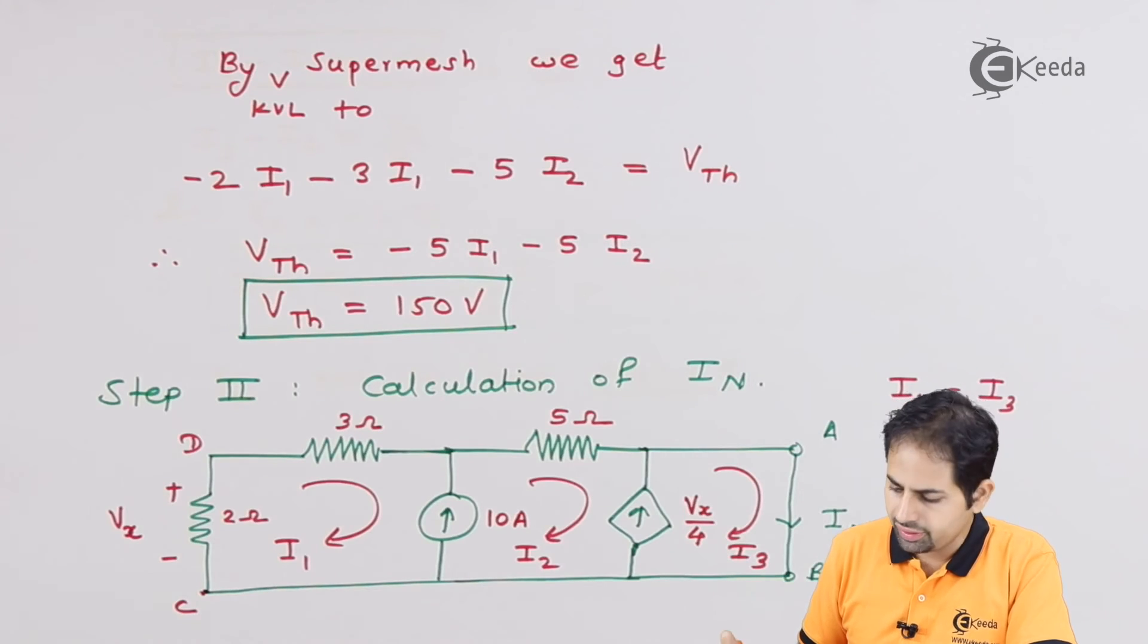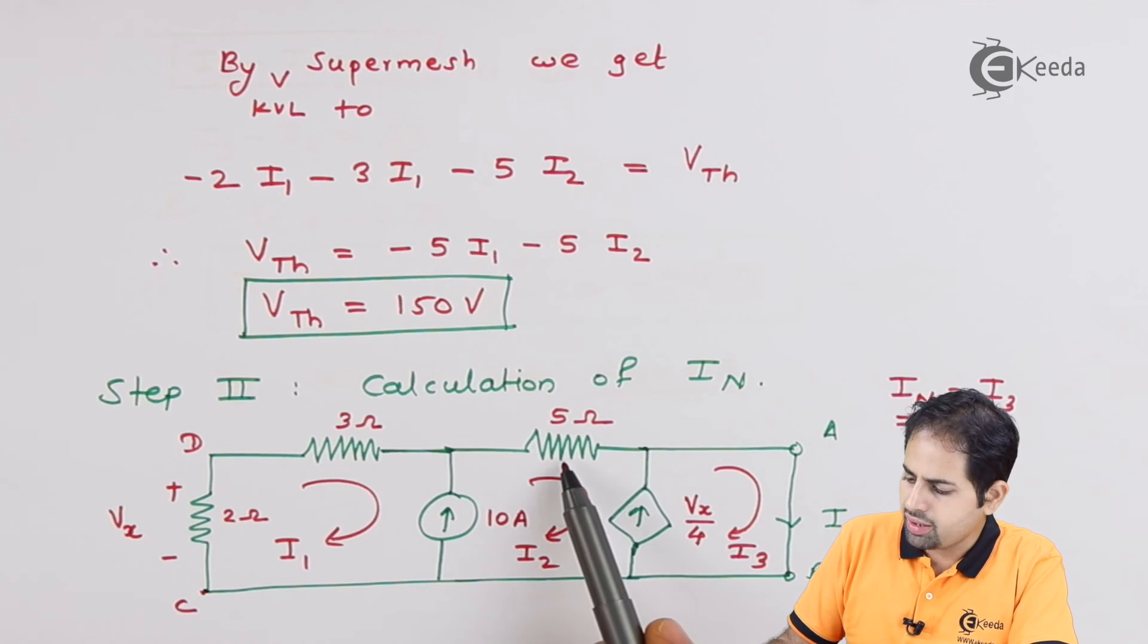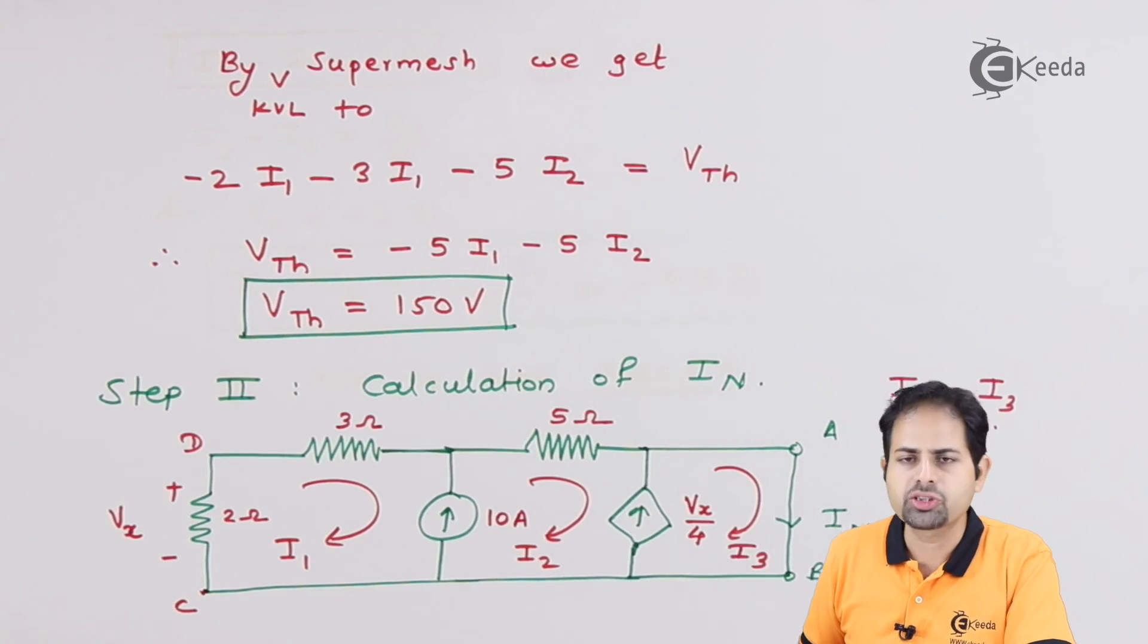So what we will get is minus two into I1, then minus three into I1, minus five into I2, and so on.